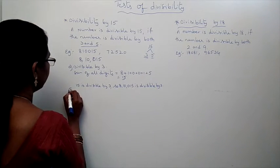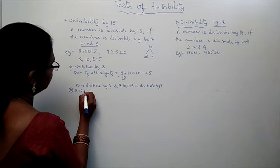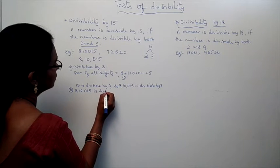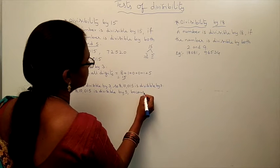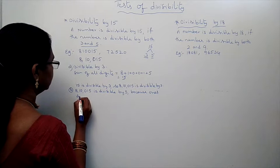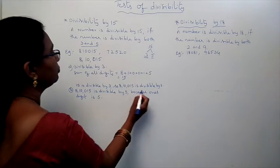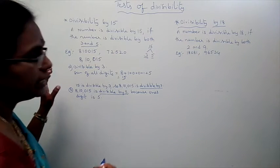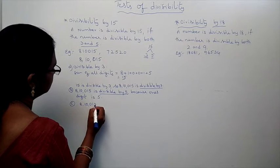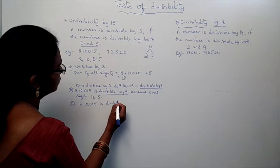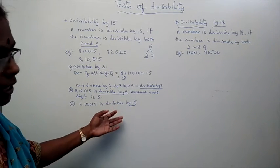Next, what is the rule of 5? Last digit should be 0 or 5. The ones digit of 8,10,050 is 5, so it is divisible by 5 because the ones digit is 5. Now, it is divisible by 3 and also divisible by 5, so it is divisible by 15. Since both 3 and 5 divide it, automatically 15 also divides it.